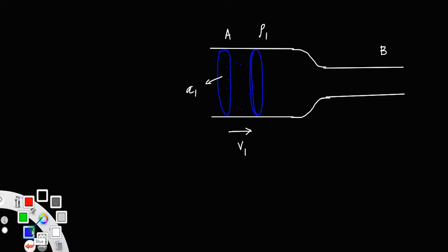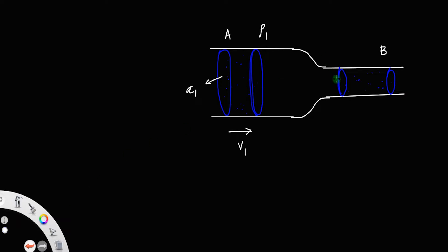Now this fluid will reach section B. The cross-sectional area of section B is less than that at A. Let us assume the cross-sectional area at B is a₂, the velocity at B is v₂, and the density of the fluid at B is ρ₂.